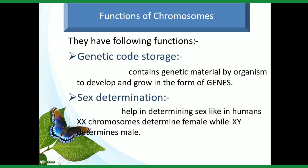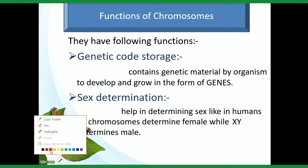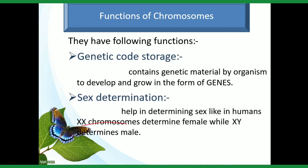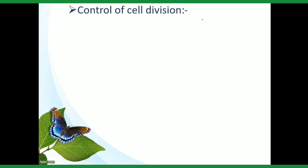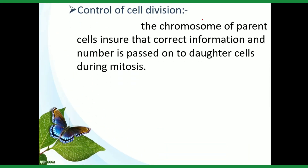The second function is sex determination — chromosomes help in determining sex, whether male or female. For example, in humans, the double X chromosome (XX) determines the female, while the XY chromosome determines the male. So sex determination is also a function of chromosomes.